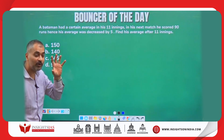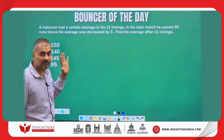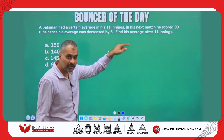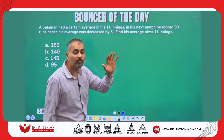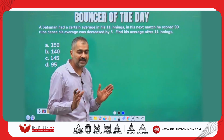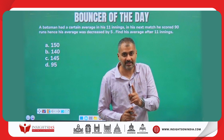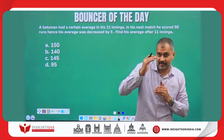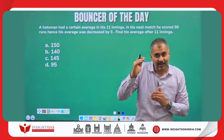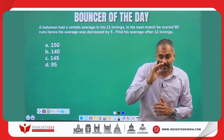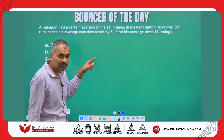In his next match he scored 90 runs, and his average was decreased by 5 runs. Even though he scored 90 runs his average decreased, meaning before this match he used to score more than 90 runs. For example, if you are scoring 50 in each subject and one subject you score 30, your average decreases. So his average before the 12th innings had to be greater than 90.